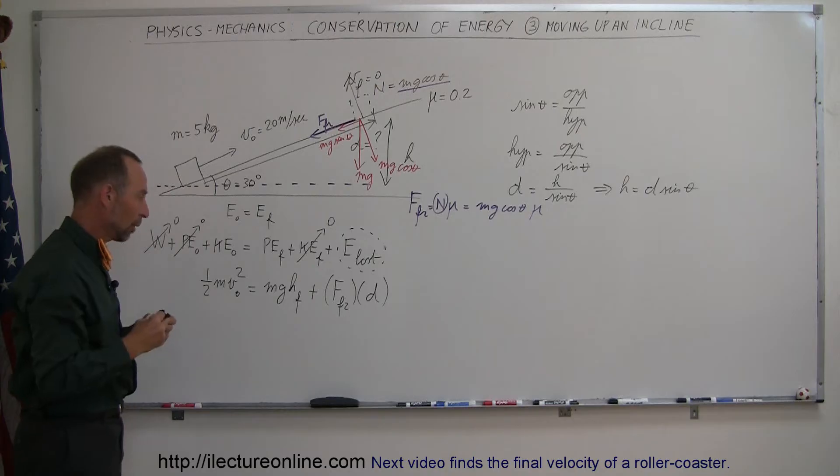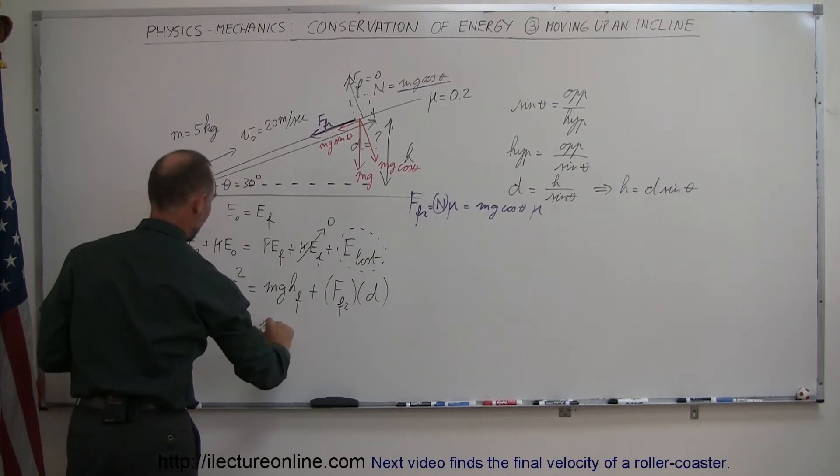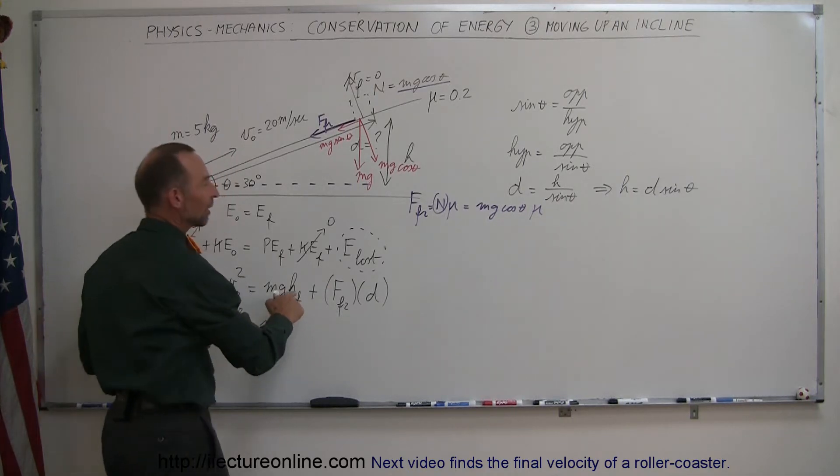So then, plugging all that into our equation here, we can say that 1/2 mv initial squared is equal to mg. And instead of H final, we're going to write it as D sine theta.